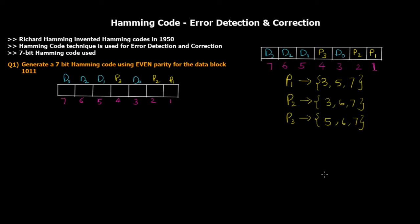Hamming code was invented by Richard Hamming in the 1950s. The Hamming code technique is used for error detection as well as correction. In this video tutorial we'll be dealing with a 7-bit Hamming code, because it is most commonly used in error detection and error correction.